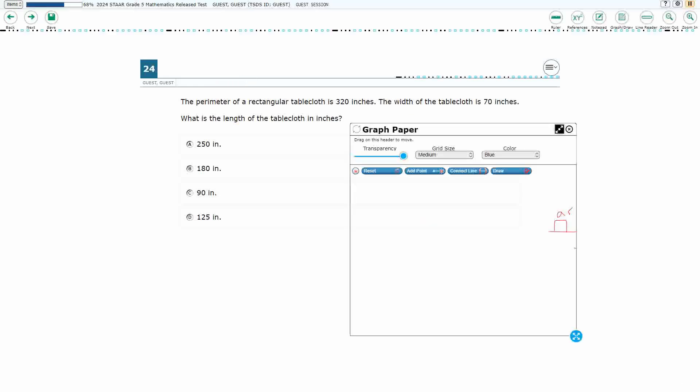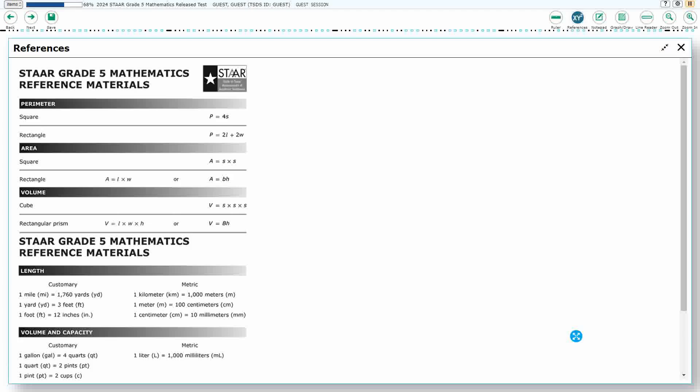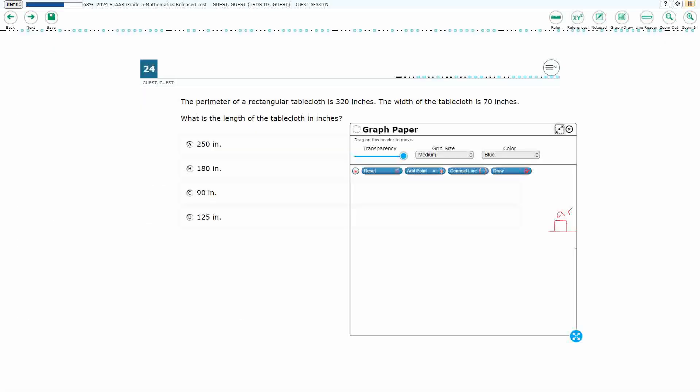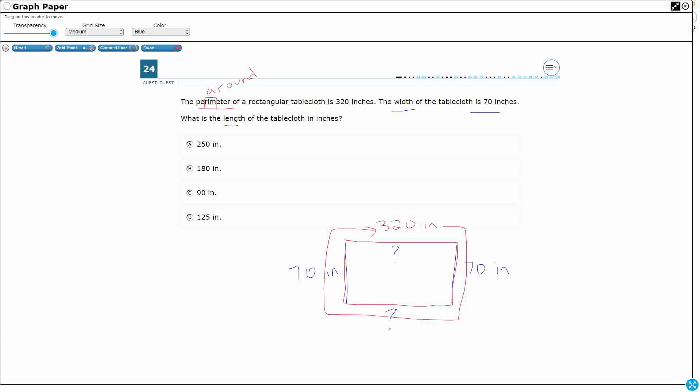Well, if we look at our formula chart, it might help us if we're used to using formulas. You see the perimeter of a rectangle is P equals 2L plus 2W. It's that second one from the top. So how does that help us? Well, let's write that: P equals 2L plus 2W.